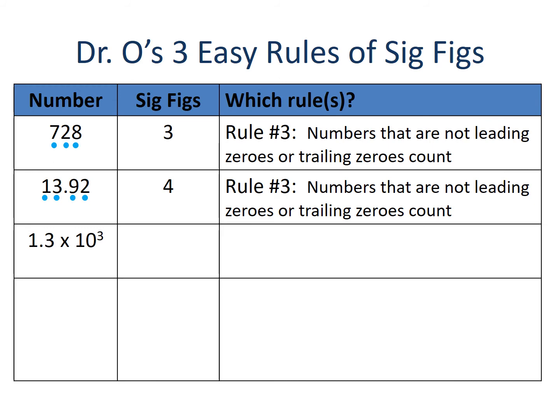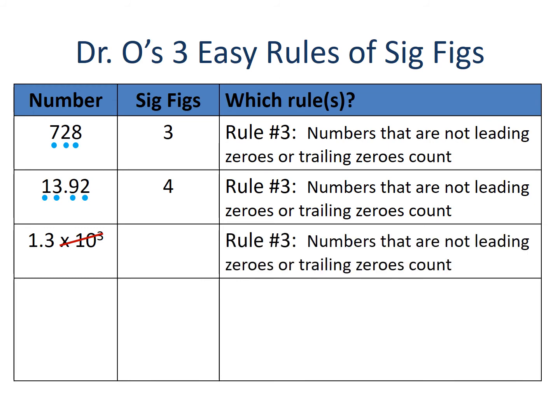Here we have 1.3 × 10³, written in scientific notation. When determining significant figures for numbers in scientific notation, simply disregard the exponent and look at the number in front — called the mantissa. Our mantissa is 1.3. Looking at 1.3, there are no zeros leading or trailing, so neither rule one nor rule two applies. Rule number three says both the 1 and the 3 are our important numbers, giving us two significant figures.